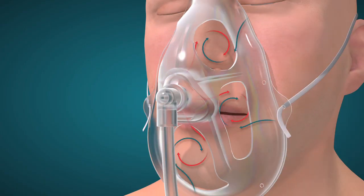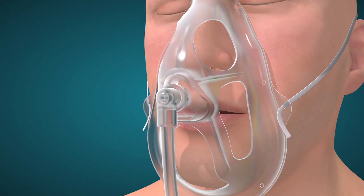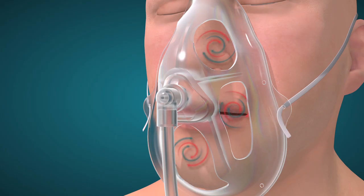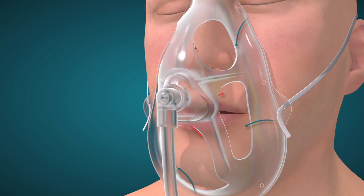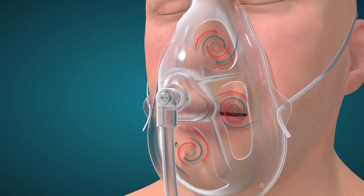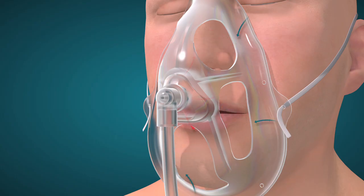During the patient's inhalation, oxygen flow is mixed with room air drawn in through mask openings. Respiratory mechanics and breathing patterns determine how room air combines with the delivered oxygen. The concentration of oxygen received during the breath is a function of the oxygen flow compared to the patient's inspiratory flow and tidal volume. This results in the prescribed concentration of oxygen being delivered to the patient.